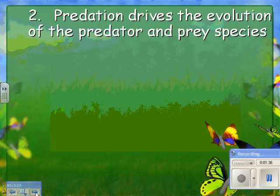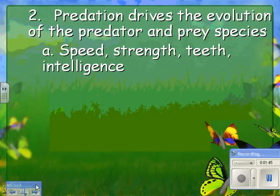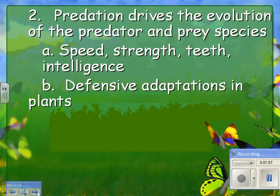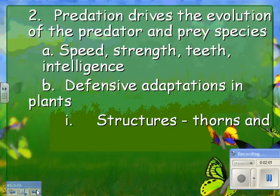Predation involves the co-evolution of predator and prey species. Over many generations, the predator might get better at catching prey, and the prey might get better at eluding the predator. Over time, this can affect speed, strength, teeth, and intelligence — these are examples of characteristics that can change in a population.